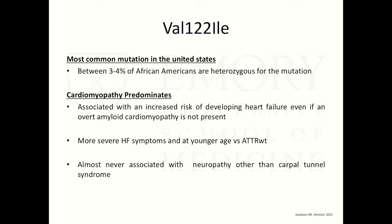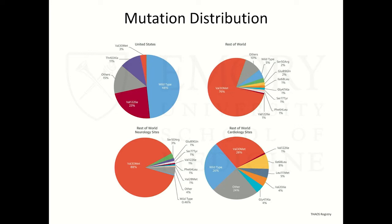Returning to the VAL122 ILE mutation: this is the most common ATTR mutation in the United States, prevalent in the African-American population. These patients develop heart failure at a younger age than the wild-type group and are almost never associated with neuropathy other than bilateral carpal tunnel specifically. The THAOS registry shows that while VAL30M is the most prevalent mutation in the rest of the world, in the United States, right after wild-type, VAL122 ILE is the most common variant.